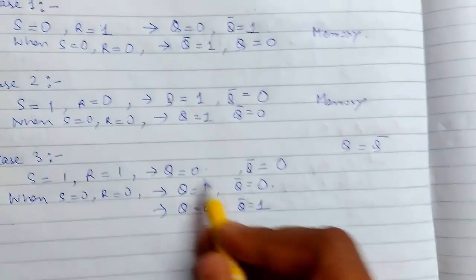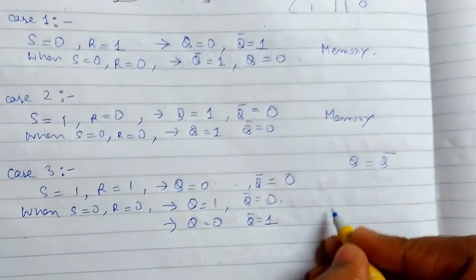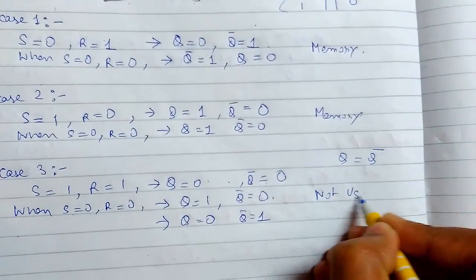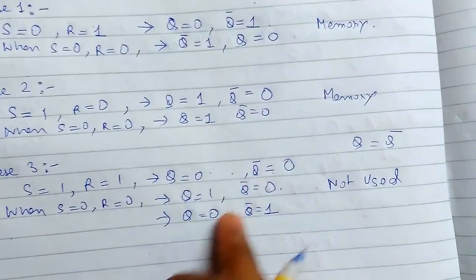We see that for the same condition, there are two contradicting cases. So this is the not used case, we cannot have different values for the same input.